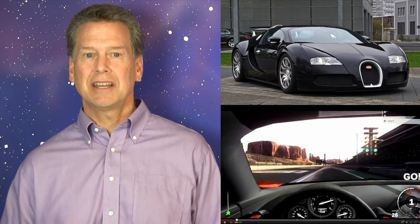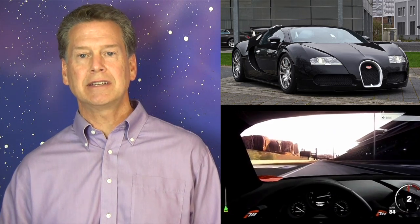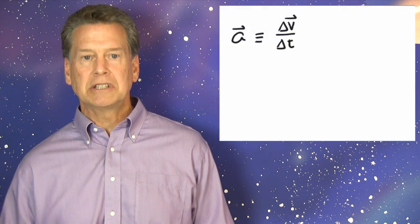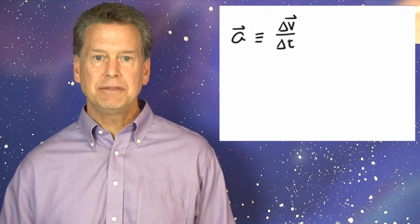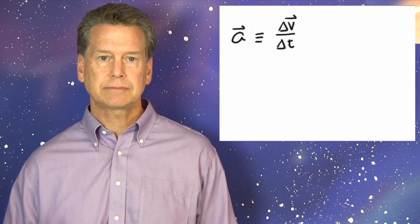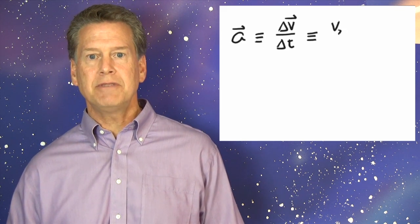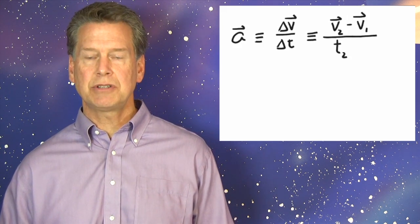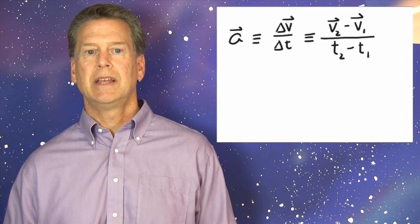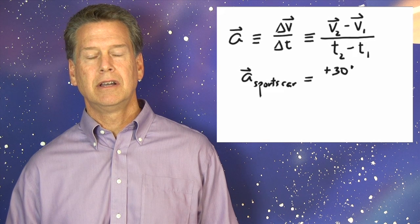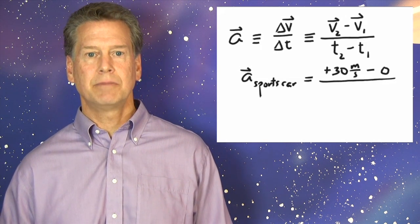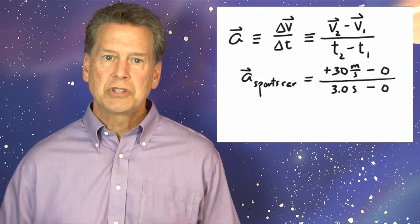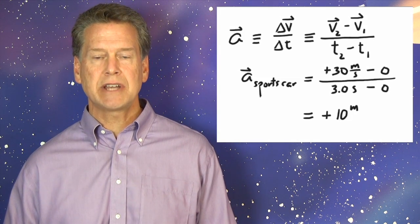To that end, let's do another example. A very, very quick sports car can go from zero to thirty meters per second in three seconds. We start with a definition to find its acceleration. Little a vector is defined as delta v vector divided by delta t. So little a vector equals v vector sub 2 minus v vector sub 1 divided by t sub 2 minus t sub 1. That's plus 30 meters per second minus 0 divided by 3.0 seconds minus 0, which equals plus 10 meters per second per second.